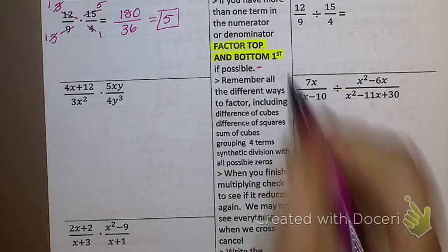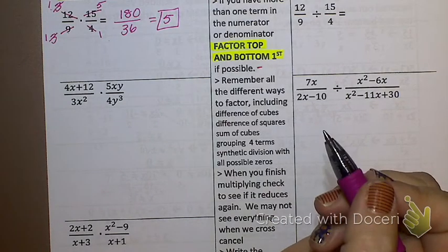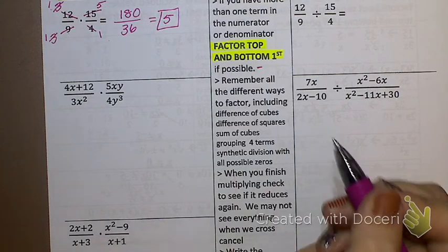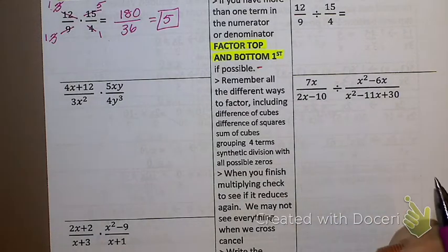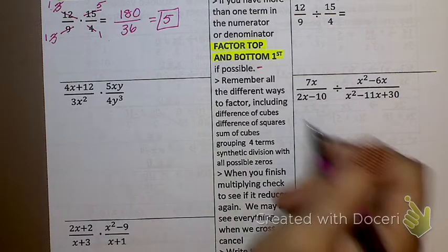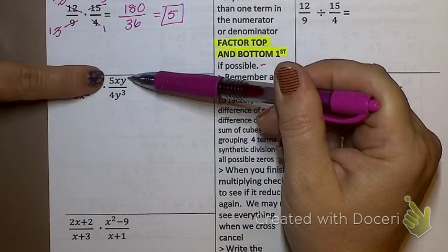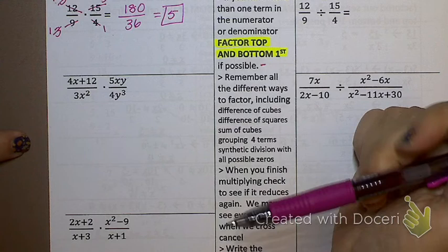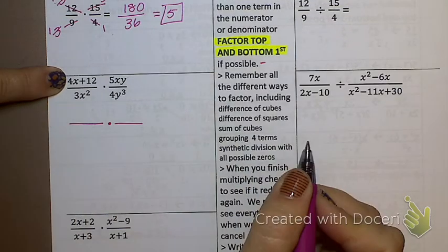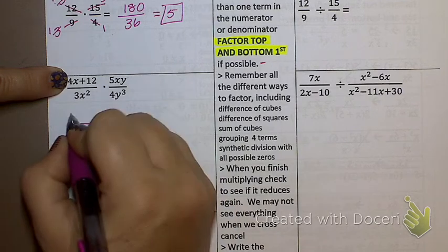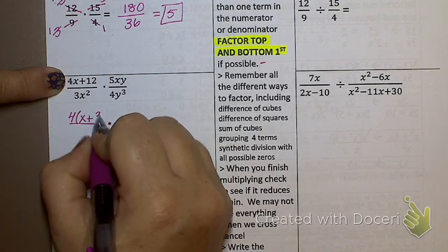Now, it does say if possible because sometimes it's not possible to factor. For example, you cannot factor a monomial. What's a monomial again? Way back from day one we learned what a monomial was. One term. Can't factor a single term. Right? But anything that can be factored must be factored. So if I look at this problem right here, I basically have four places I need to look. I need to look at the top, the bottom, the top, and the bottom. Can the top here be factored? Yes or no? I can take out a four, can't I? If I take out a four, what's left inside? X plus three.